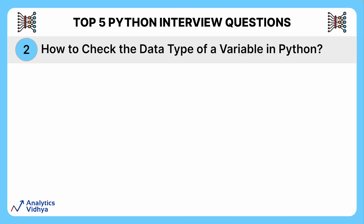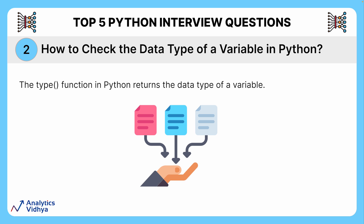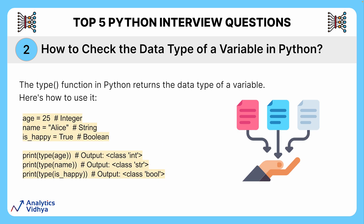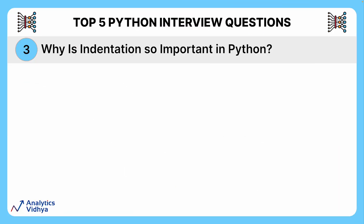The next question is: how can we check the data type of a variable in Python? That's where the type() function comes in. Think of the type() function as a handy label checker — just like a label on your luggage, type() tells you what kind of data a variable holds. For example, with three variables — age, name, and is_happy — all you need to do is call the type() function on them. This ensures you are using the right data type for calculations and operations.